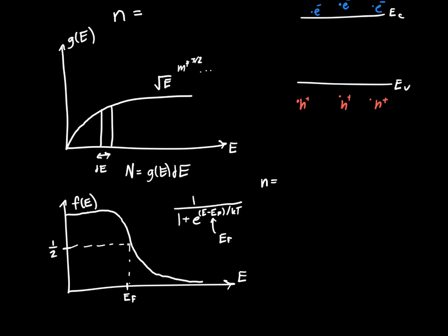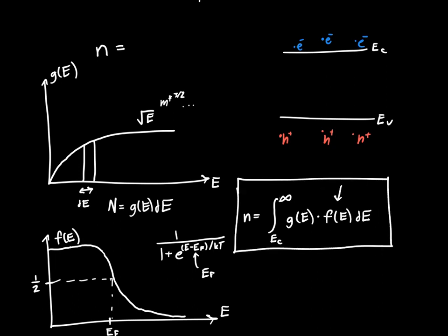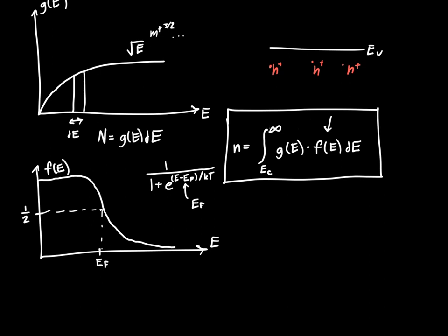Altogether, the number of electrons equals the integral from the conduction band edge E_C — since those are the electrons we're interested in — to the maximum energy of the conduction band, of g(E) times f(E) dE. Since f(E) falls off so quickly with energy, we can take E_C max to be infinity, which makes integrating much easier. So the number of electrons equals the integral from E_C to infinity of the density of states times the probability of occupation, integrated over energy.